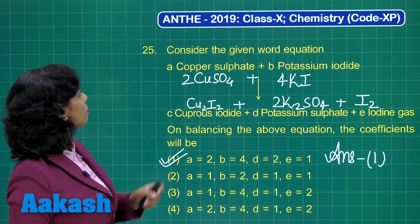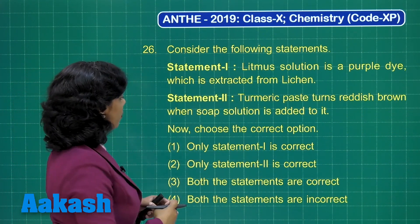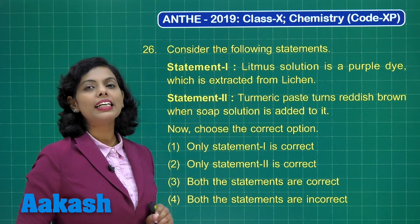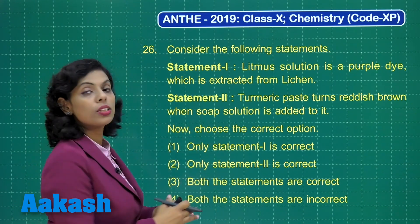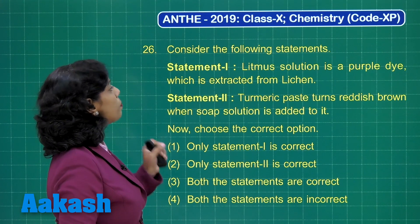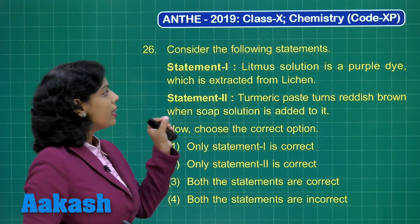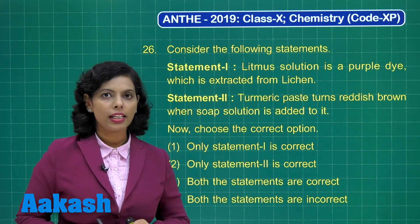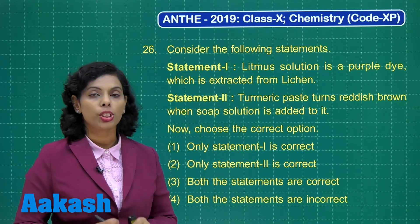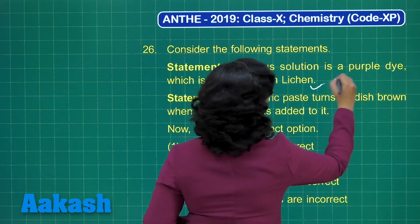Let us take question number 26. Consider the following statements and choose the correct option — you need to identify whether these statements are correct or not. Statement 1: litmus solution is a purple dye which is extracted from lichen. Yes, it is a purple color dye and it is extracted from lichen, which is a symbiotic relation between algae and fungus. So this is correct.